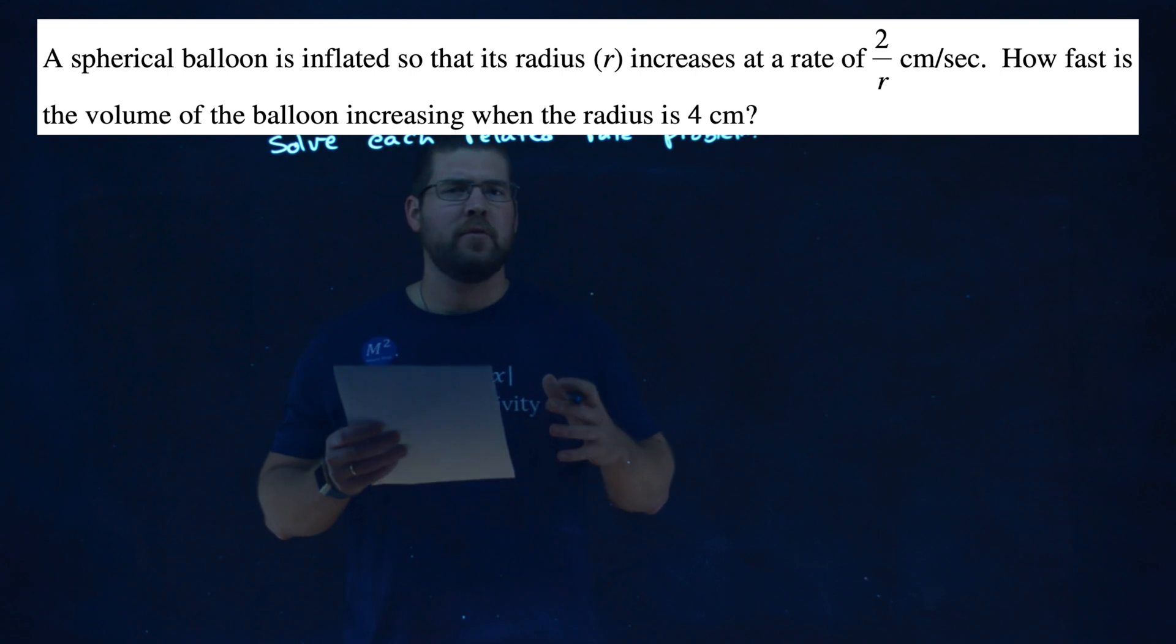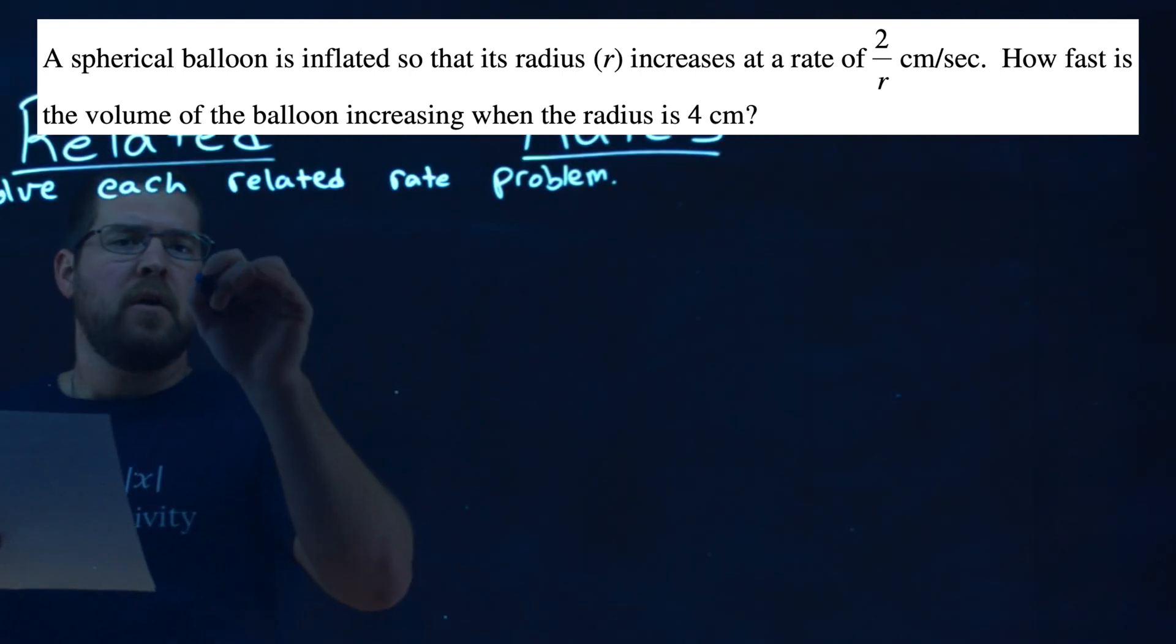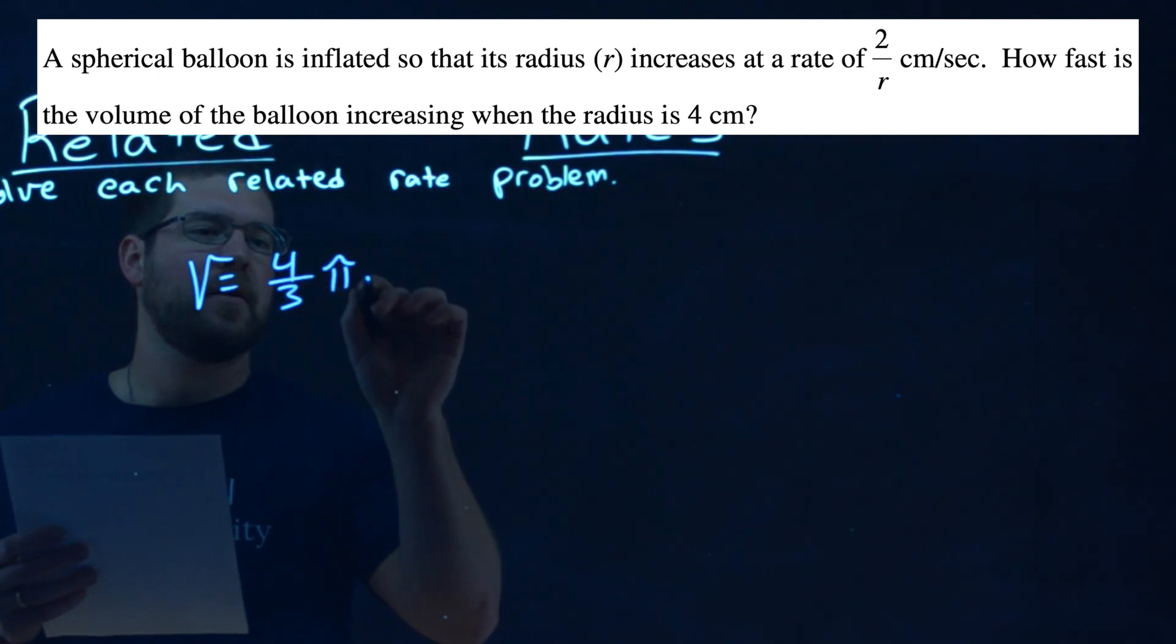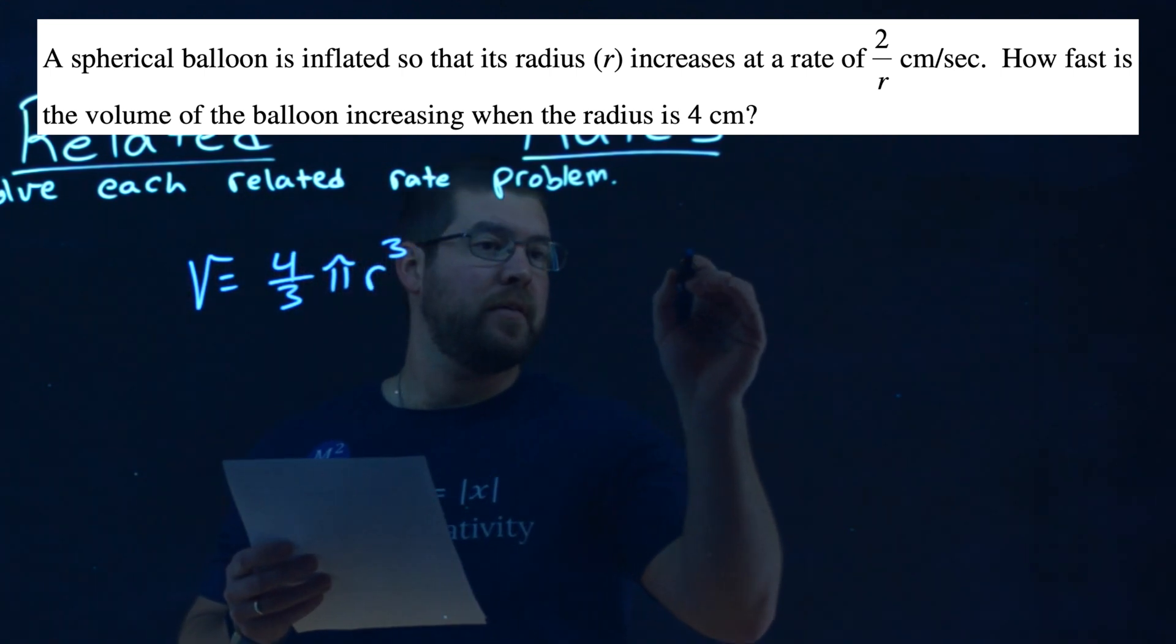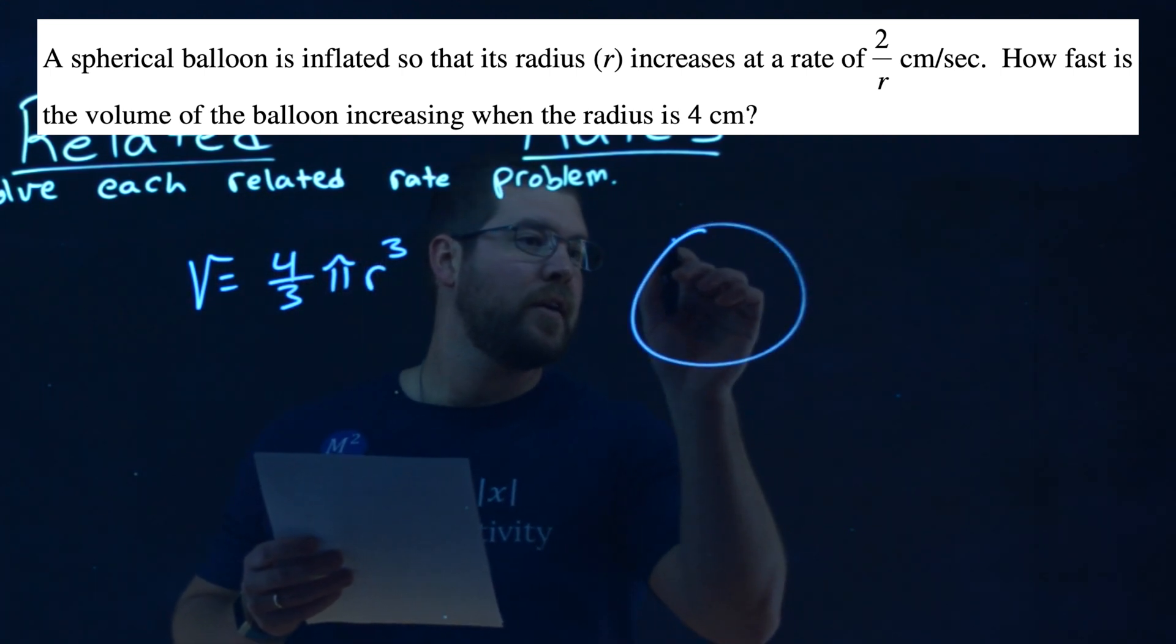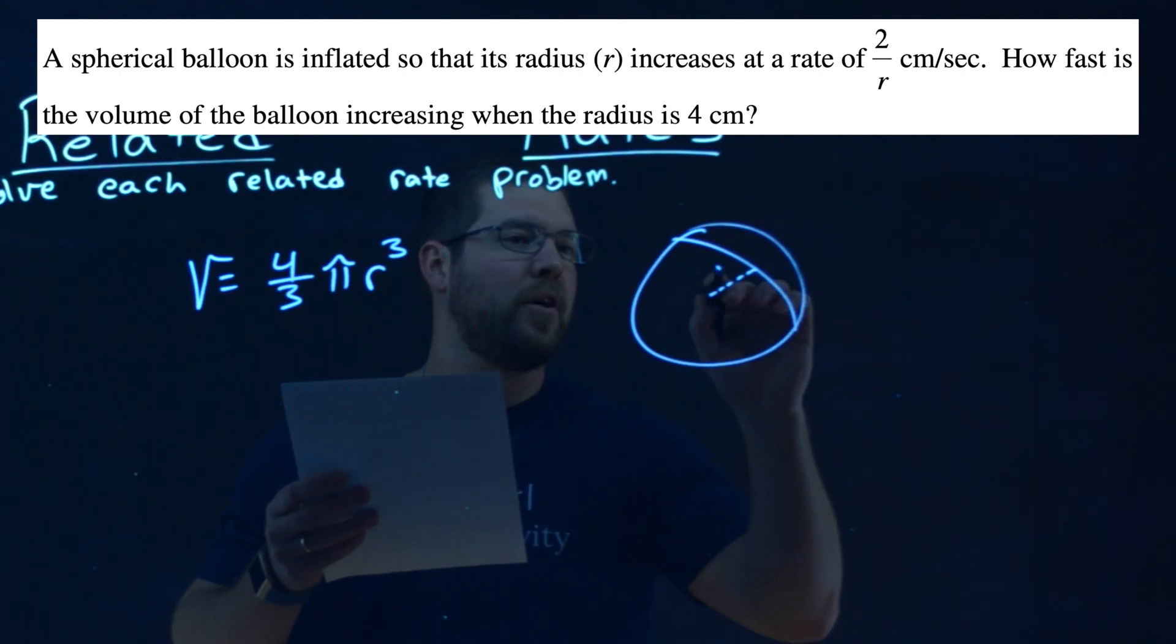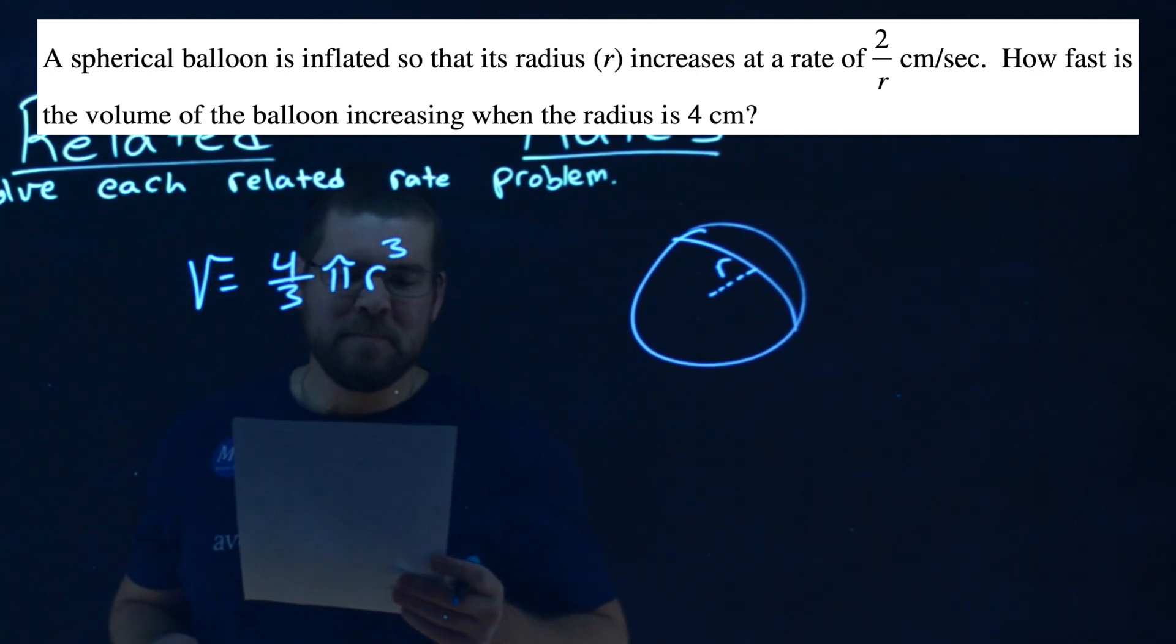Okay, first, what's the formula for the volume of a sphere, this balloon? Well, the volume is equal to 4 thirds pi r cubed. And if we had an image of this, I'm not the best at drawing spheres. It's something like that, and let me say the radius r. Don't judge my spherical balloon right there.